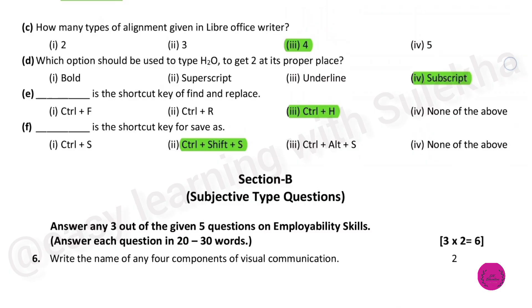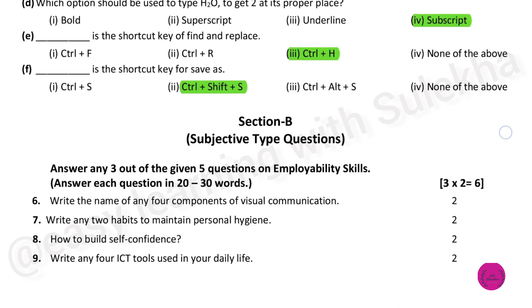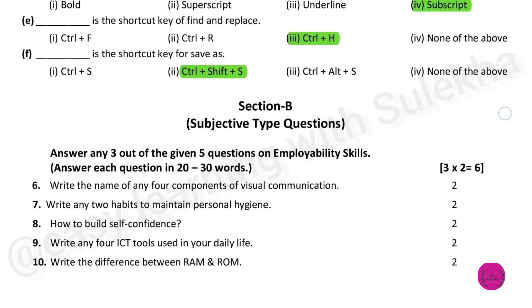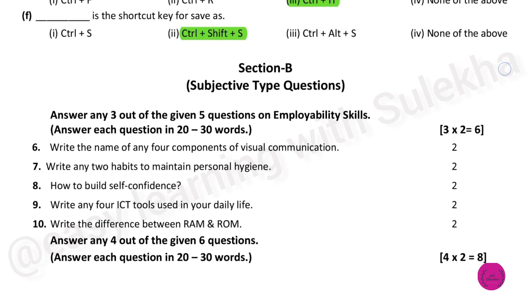Which option should be used to type H2O to get 2 at its proper place? The answer is subscript. Blank is the shortcut key to find and replace, that is Ctrl+H. Then blank is the shortcut key for save as, that is Ctrl+Shift+S.